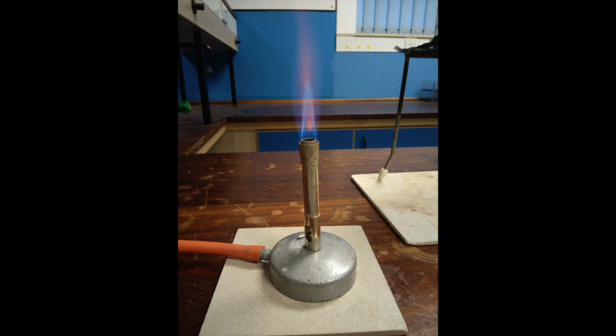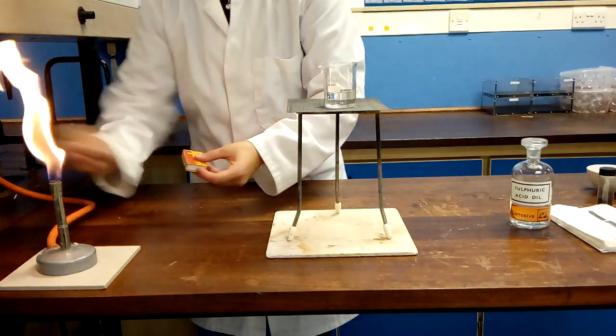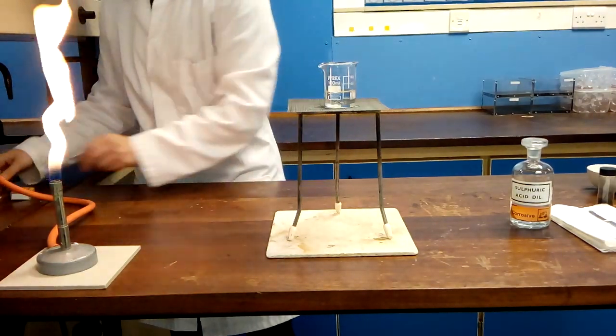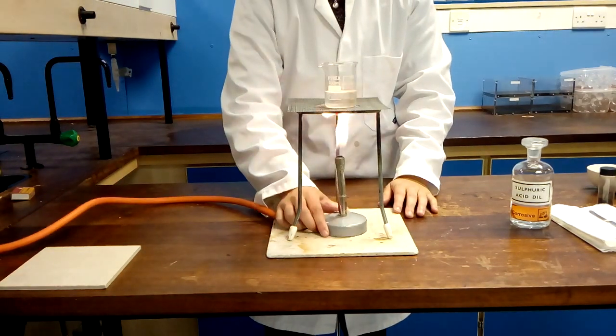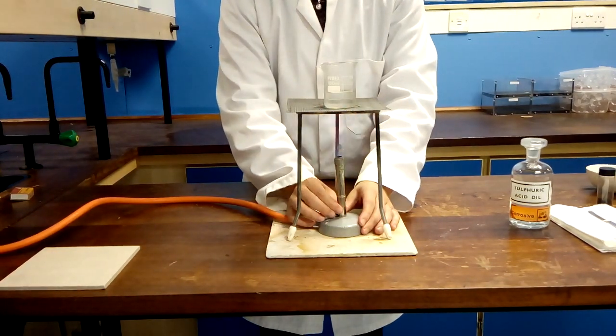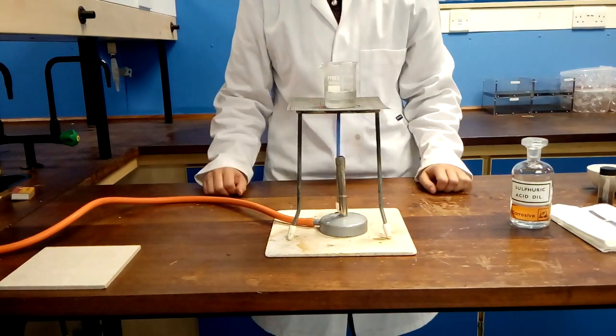When you open the collar the Bunsen turns to a blue heating flame which is much hotter. Turn the gas on and light the Bunsen. It is important to position the Bunsen between the legs of the tripod so that it can be easily removed. Open the collar and set to the blue heating flame.